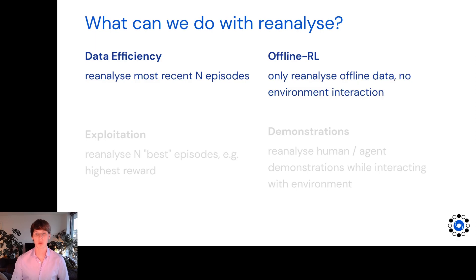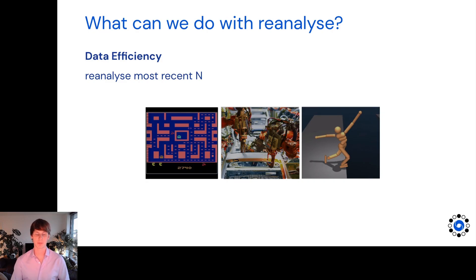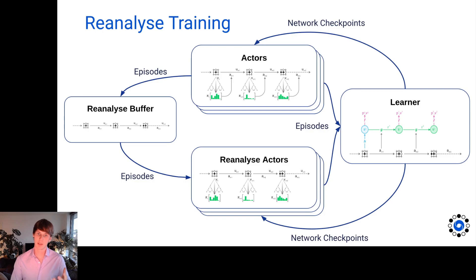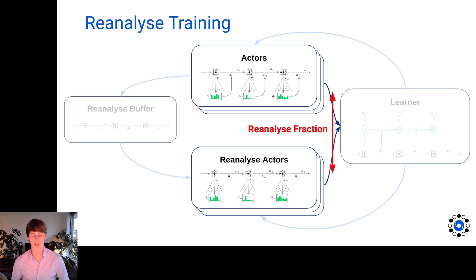Here we're going to focus on the data efficiency and offline RL use cases. Data efficiency comes up a lot, even in simulated domains where the simulator can be very expensive and slow, or in real-world domains and robotics tasks where every environment interaction can be very costly. Going back to the diagram of reanalyze training, we focus on the ratio between how much we interact with the environment and how much we reanalyze — that's what we refer to as the reanalyze fraction throughout our paper.